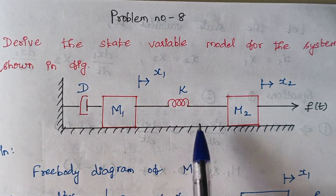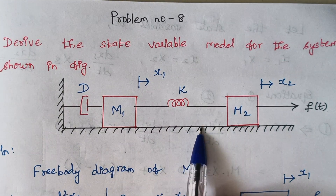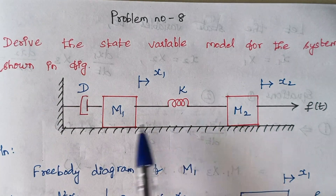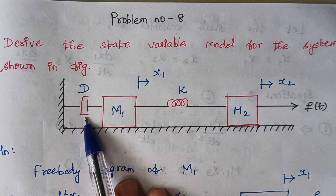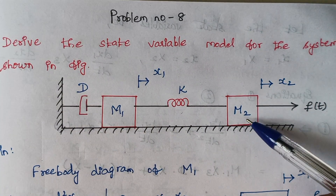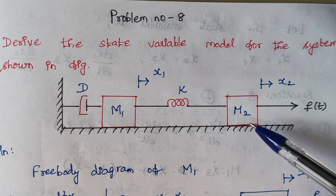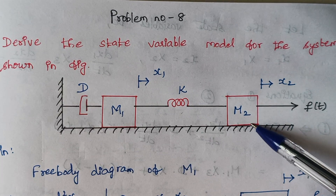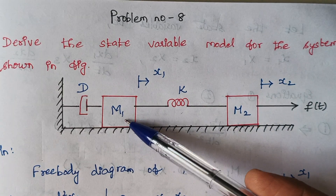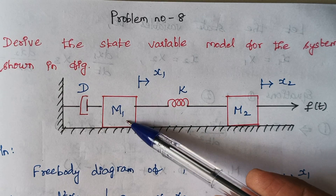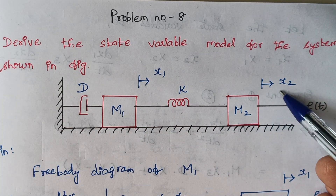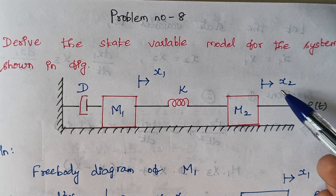This diagram has two masses, one spring and one dashpot, and f(t) is applied to mass m2. The respective displacement due to this force f(t) is: for m1 the displacement is x1, and for m2 the displacement is x2.